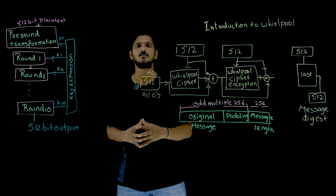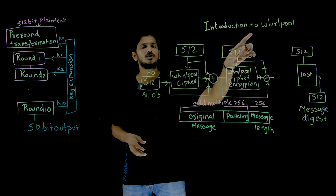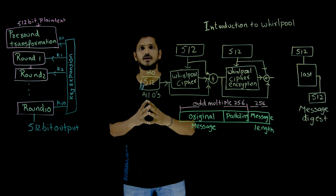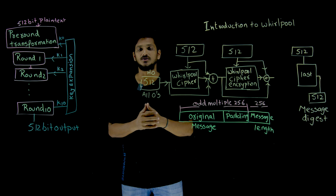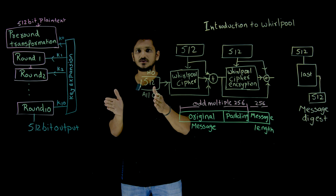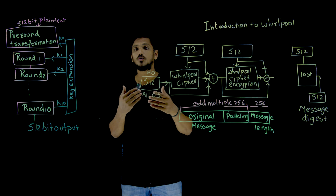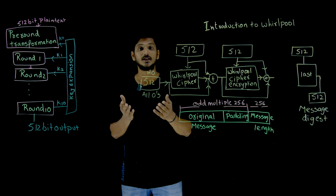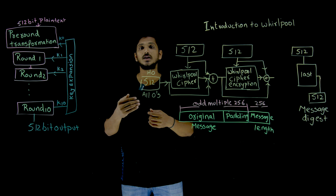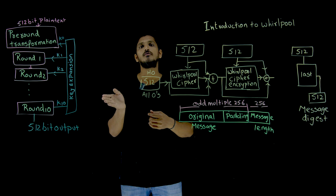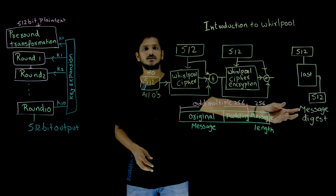Hi, welcome to Learning Monkey. I am Ragu. In this class, we'll discuss an introduction to the Whirlpool ciphertext technique. This technique is used to generate the message digest — meaning we take the original message and generate a message digest from it. In our previous classes, we already discussed SHA-512, another cryptography hash function technique used to generate the message digest. Whirlpool is our second such technique.